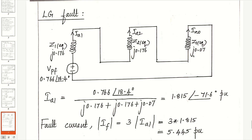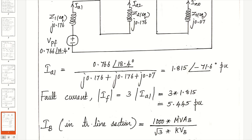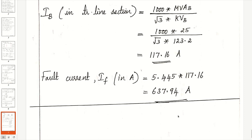For an LG fault, connect all three Thevenin's equivalent sequence networks in series. Ia1 = VPF / (Z1 + Z2 + Z0). Substituting values: Ia1 = 1.815∠−71.6° per unit. The magnitude of fault current for LG fault is 3 × |Ia1| = 3 × 1.815 = 5.445 per unit. To convert to actual units, calculate the base current in the fault section (section 2, transmission line): IBase = 117.16 amperes. Fault current in amperes = per unit fault current × base current = 637.94 amperes.